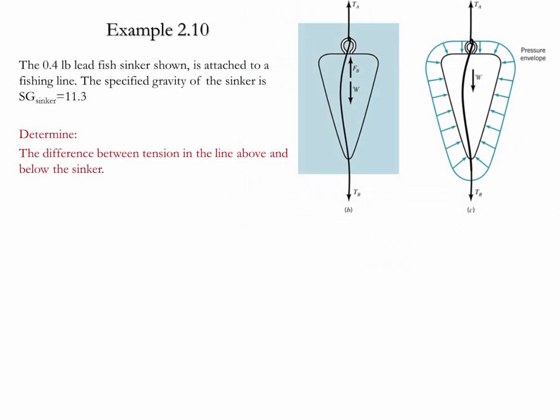Example 2.10. In this example, we have a 0.4 pound fish sinker which is tied to a fishing line as shown. The specific gravity of the sinker is equal to 11.3. We need to determine the difference between the tension in the line above and below the sinker.